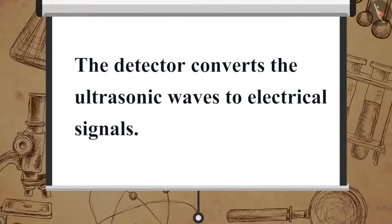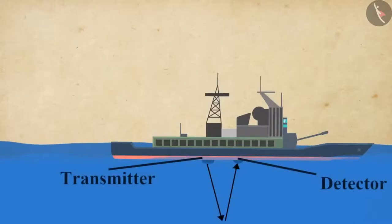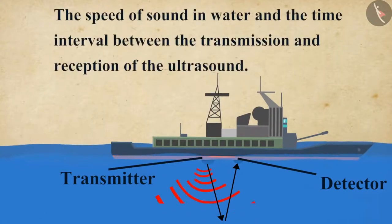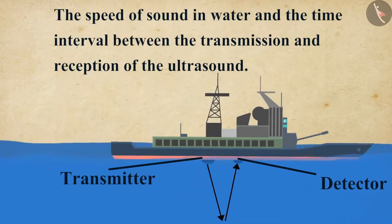The detector converts the ultrasonic waves to electrical signals. The distance of the object that reflected the sound wave can be calculated by knowing the speed of sound in water and the time interval between the transmission and reception of the ultrasound.